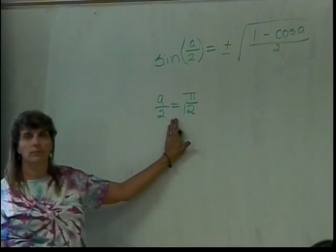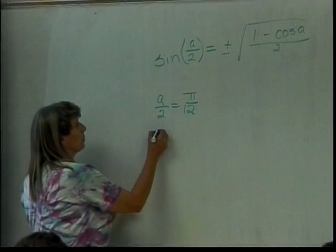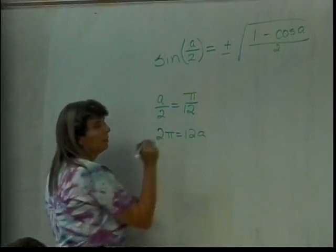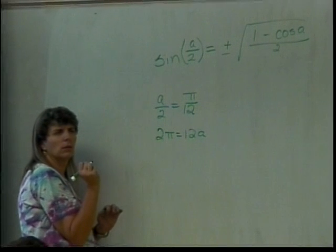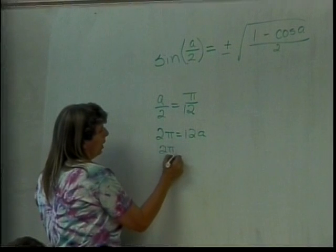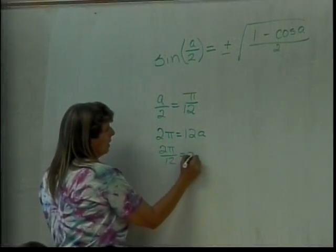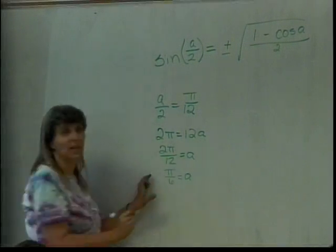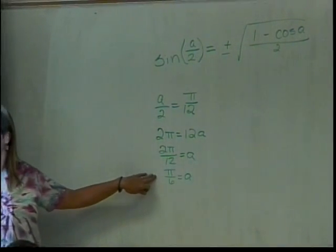So how do I solve this for A? What do I do? If I cross multiply, I'll get two pi equals 12 times A. And then divide by 12. So I get two pi over 12 equals A. Well, two pi over 12 is the same thing as pi over 6. Oh, that's good, because I know what all my pi over 6 things.